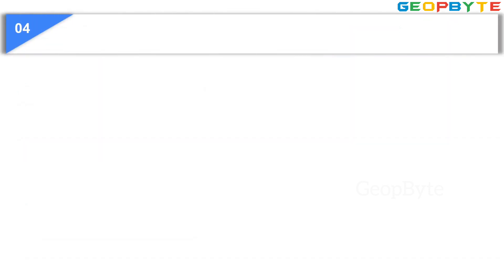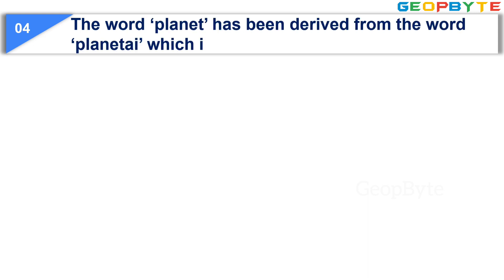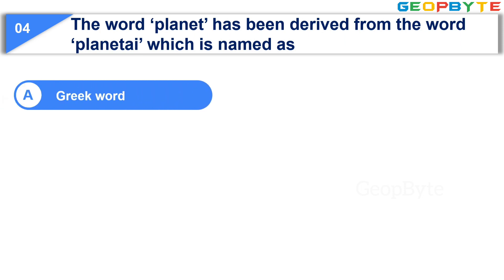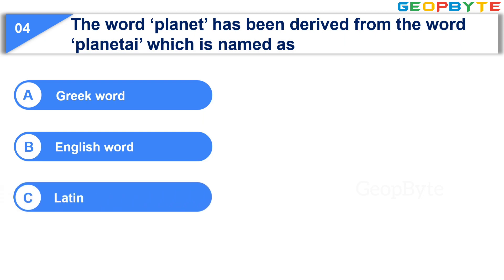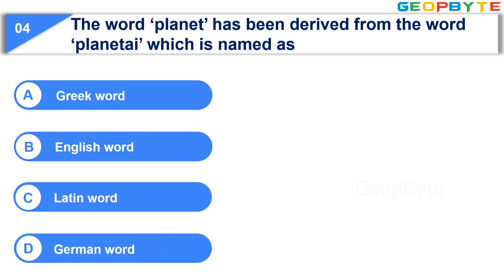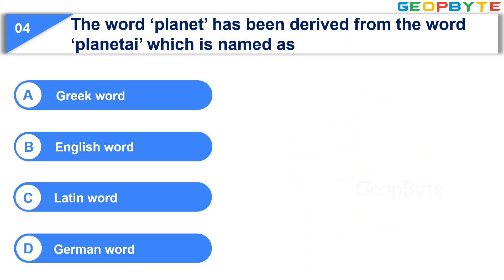Moving to the fourth question: The word 'Planet' has been derived from the word 'Planetia', which is — Option A: Greek word. Option B: English word. Option C: Latin word. Option D: German word. Your time starts now. Your time is up and the correct answer is Option A: Greek word.